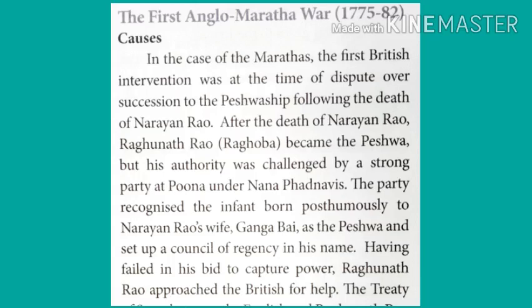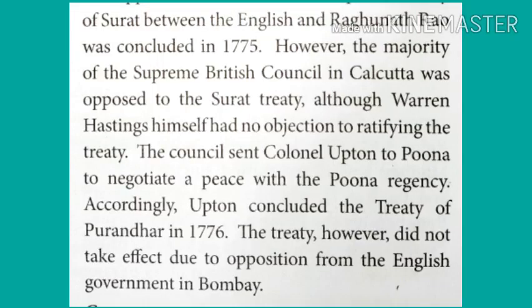The party recognized the infant born posthumously to Narayan Rao's wife Gangabai as the Peshwa and set up a council of regency in his name. Having failed in his bid to capture power, Raghunath Rao approached the British for help. The Treaty of Surat between the English and Raghunath Rao was concluded in 1775.